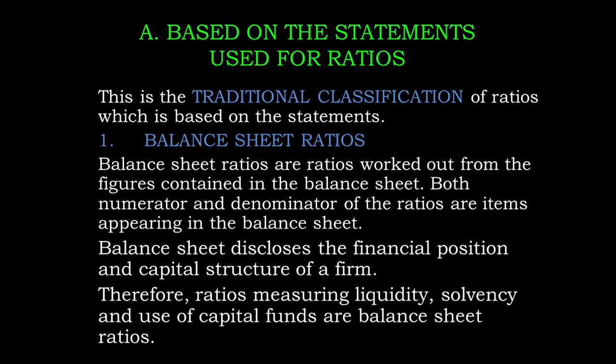Based on statements, we classify the ratios — this is called traditional classification. Based on the statements, there are 3 types of classification. The first one is Balance Sheet Ratios.